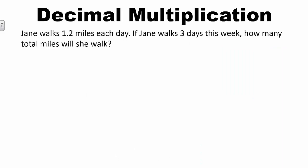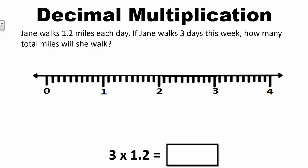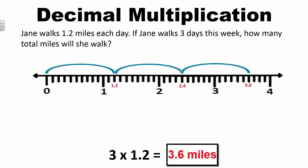Students can also represent multiplication problems on a number line. For example: Jane walks 1 and 2 tenths miles each day. If Jane walks 3 days this week, how many total miles will she walk? I can represent this problem with the equation 3 times 1 and 2 tenths, or 3 groups of 1 and 2 tenths on the number line. 3 groups of 1 and 2 tenths gives a product of 3 and 6 tenths. So Jane will walk 3 and 6 tenths miles this week.